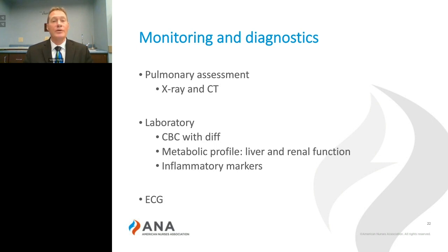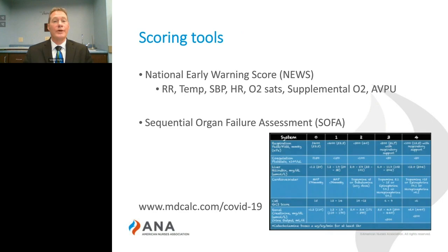We may use scoring tools to warn us early. The National Early Warning Score, or NEWS, looks at vital signs as well as oxygen saturation and the use of supplemental oxygen and level of consciousness to alert us early in the progression of the disease so that we can intervene early and maybe move that patient to a higher level of care if needed.